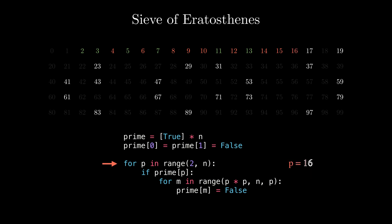There is one small optimization that we can do here. Notice that the inner loop always starts from p times p. This means that the inner loop does no operations for any number larger than the square root of n. So, in the outer loop,